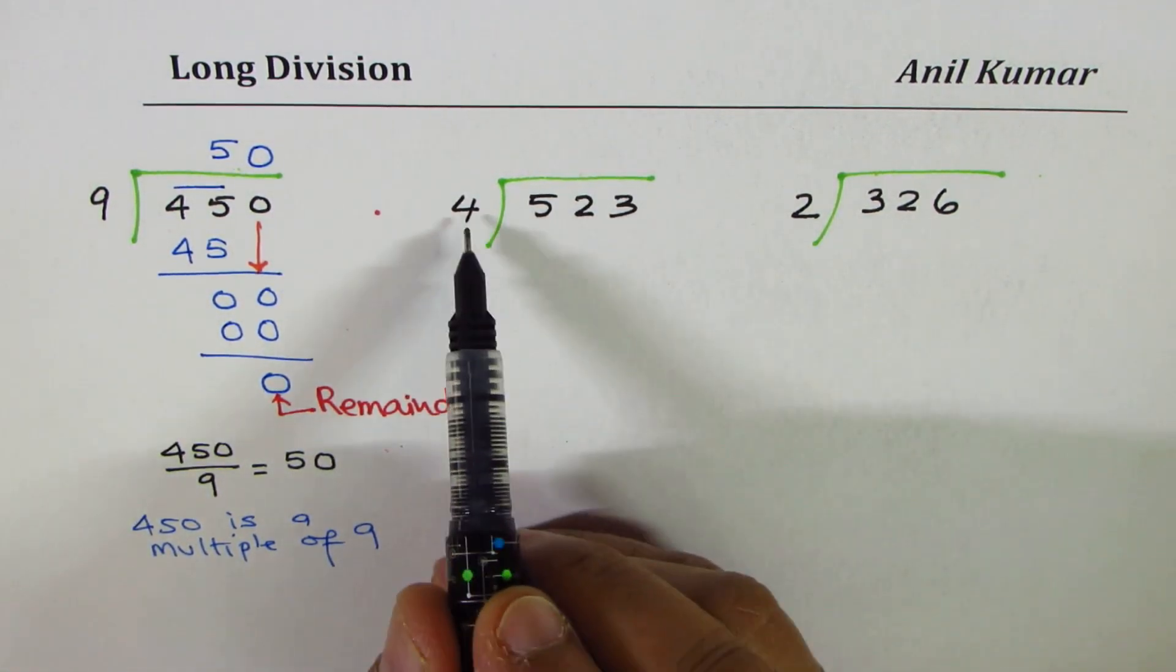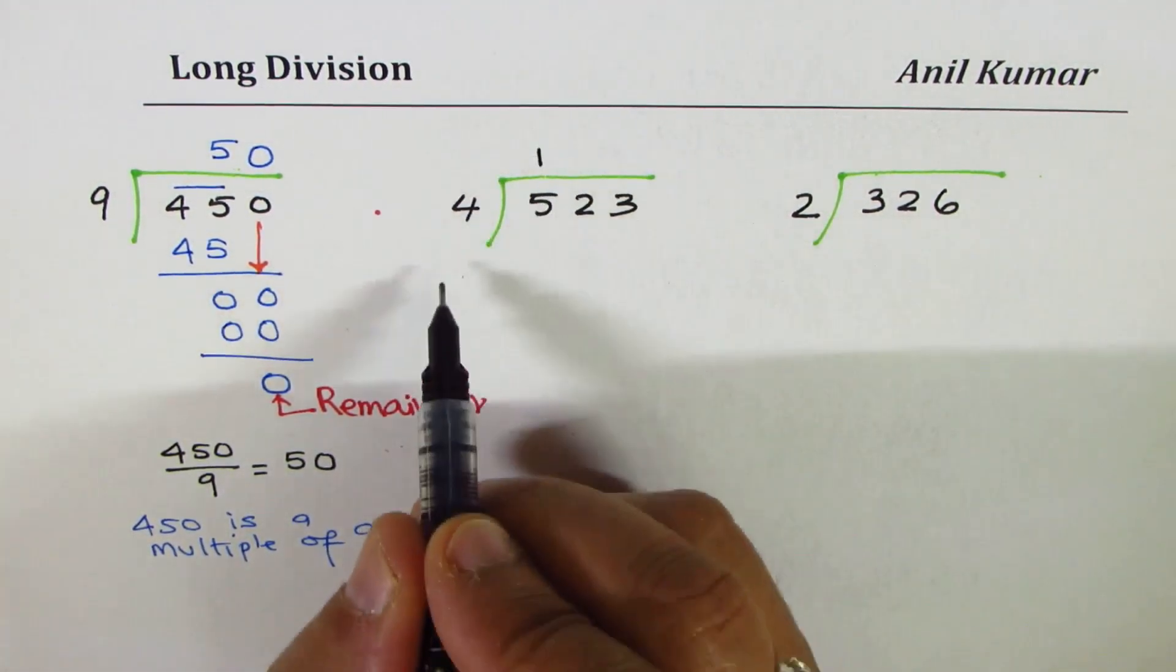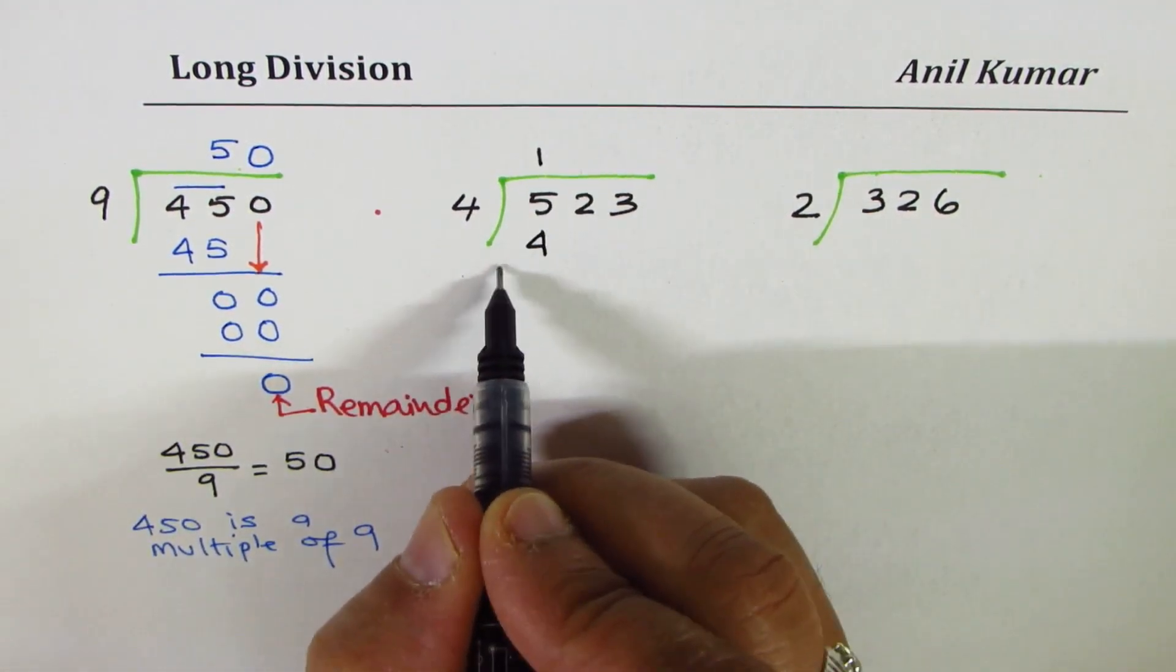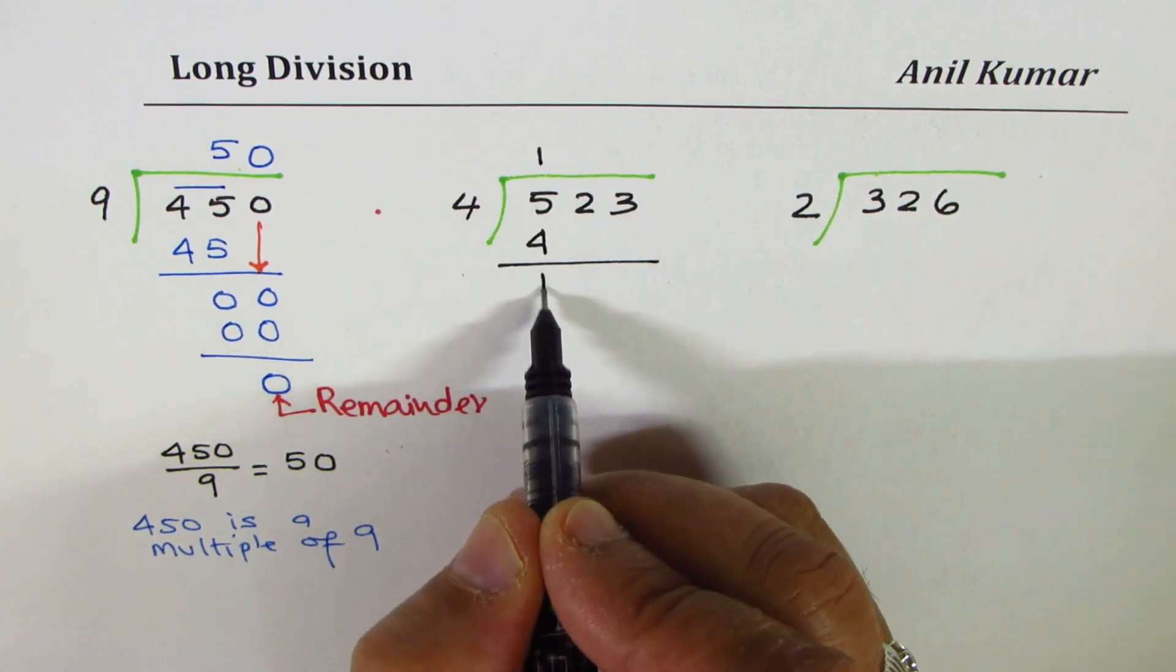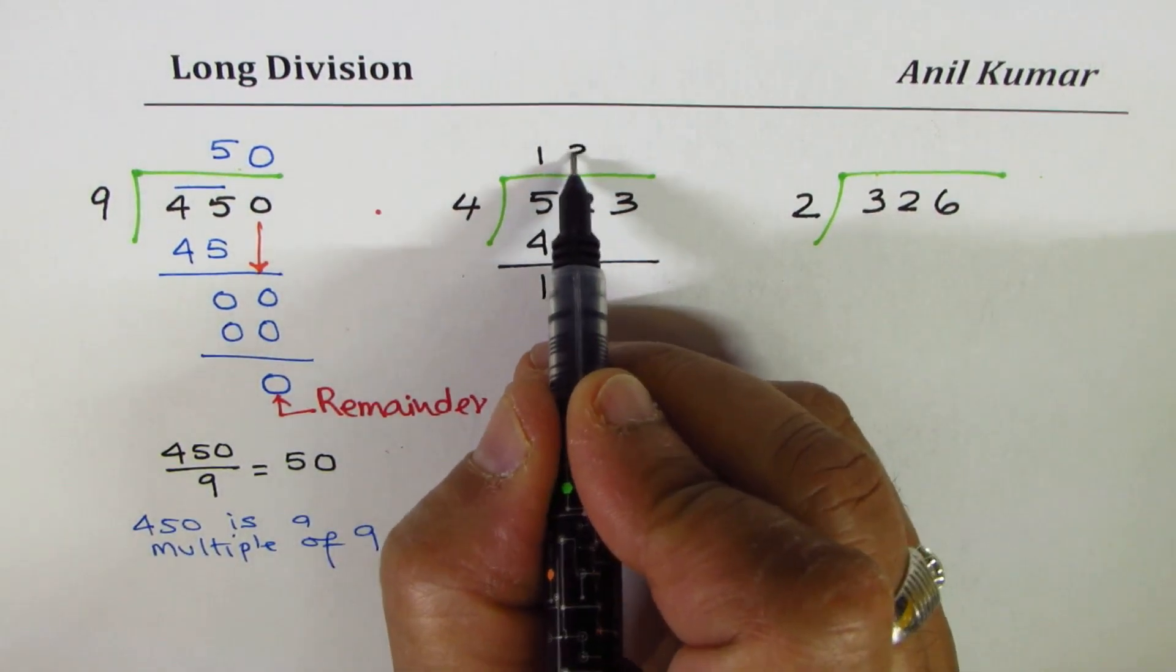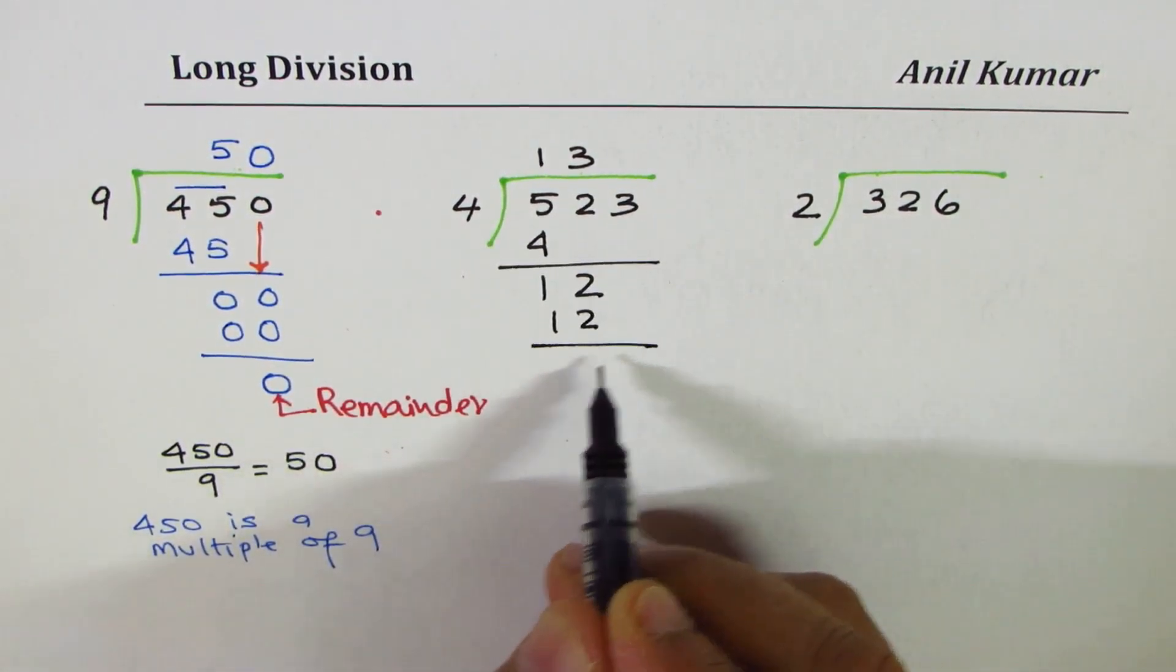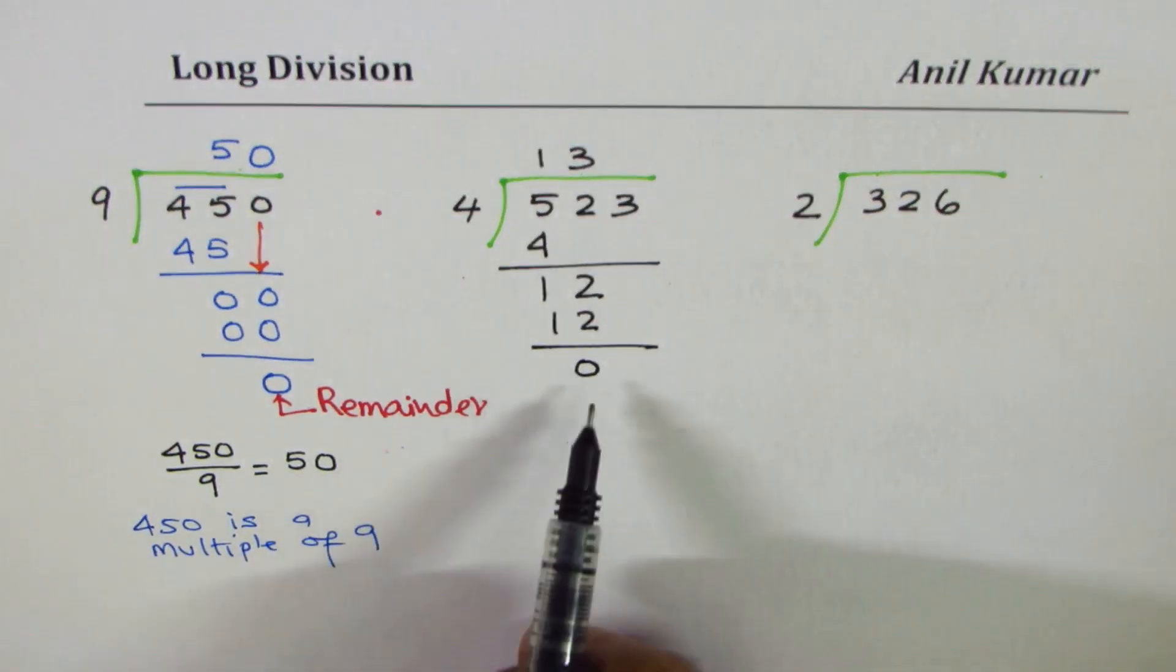We'll divide 523 by 4. 5 is greater than 4, so one number could be taken. 4 times 1 is 4. When you take away 4 from 5, you get 1. Bring down the next number, which is 2. It becomes 12. 4 goes perfectly with 12. 4 times 3 is 12. Again, you get a 0.